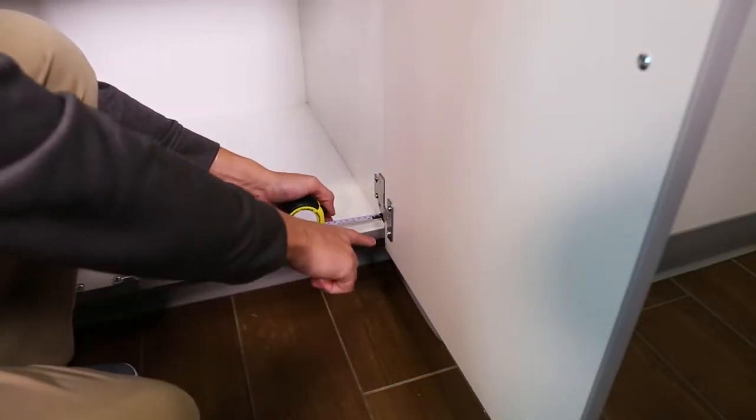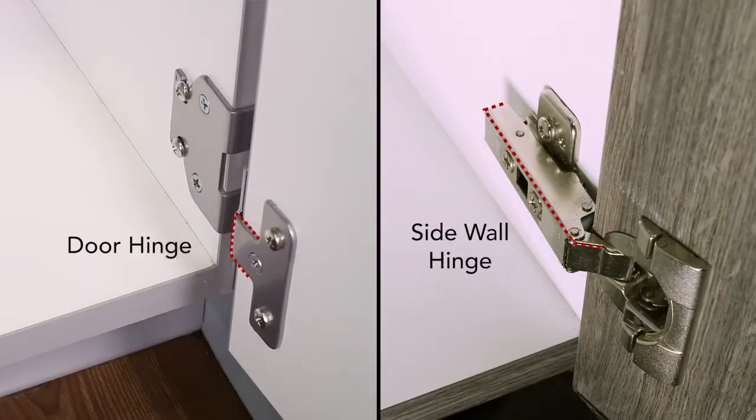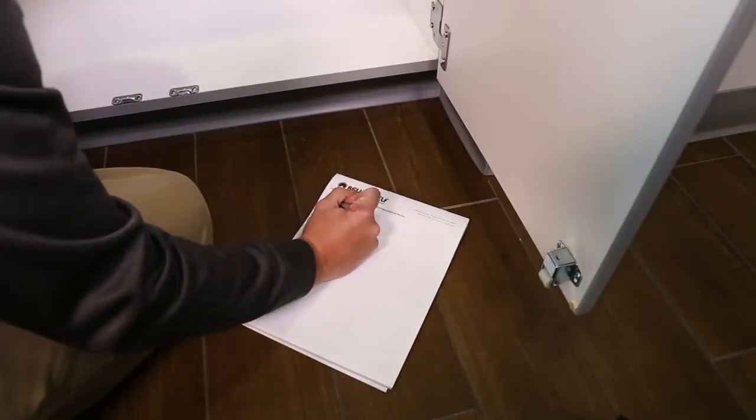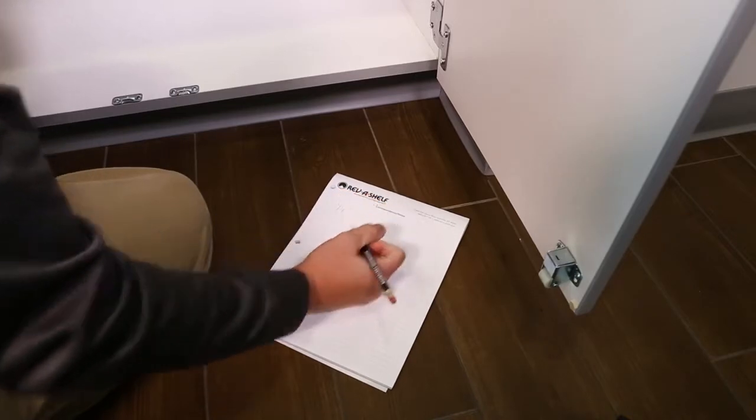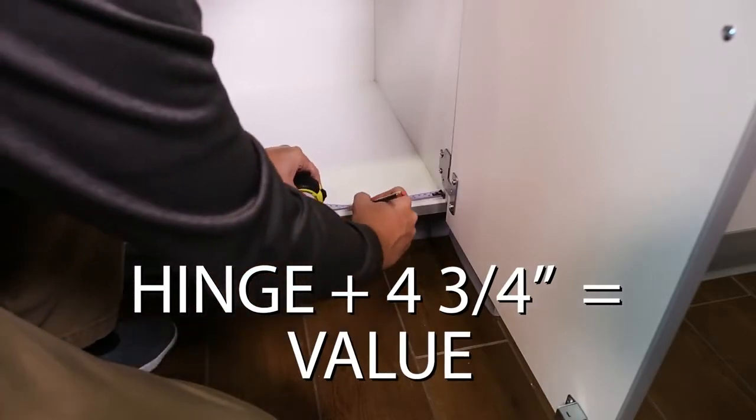Determine which hinge sticks out into the cabinet opening more. In our case, it's the door hinge. In some other cabinets, it may be the side wall hinge. Measure how far the hinge sticks out and record that number. Take that number and add 4 and 3/4 of an inch.